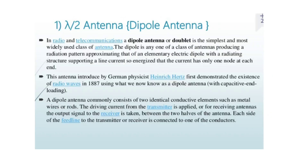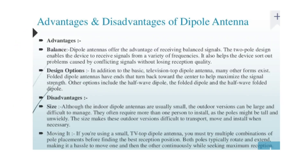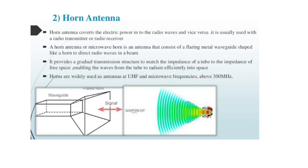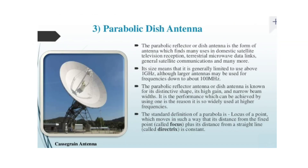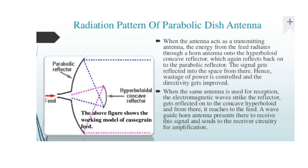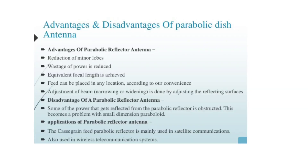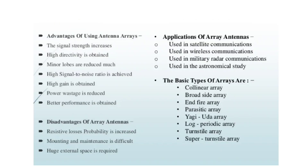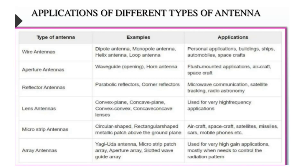Let's learn how to use the dipole antenna. We have already covered advantages and disadvantages. Let's learn how to use the horn antenna — advantages, disadvantages, and parabolic dish. We have learned how to use a parabolic dish — advantages, disadvantages, and array antennas — advantages, disadvantages, and basic types of array. We have learned how to use their applications and wire antennas.